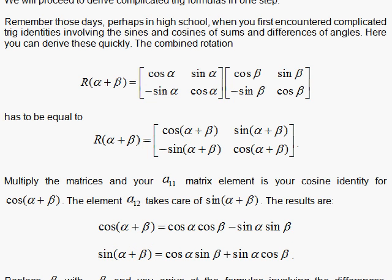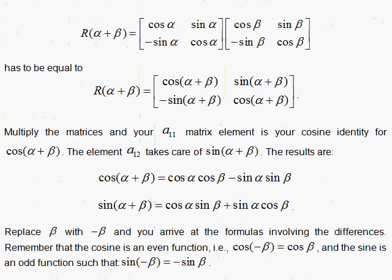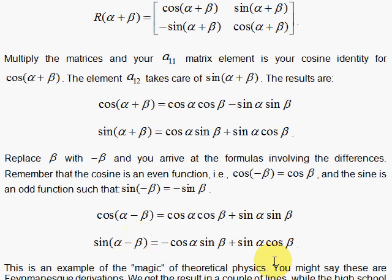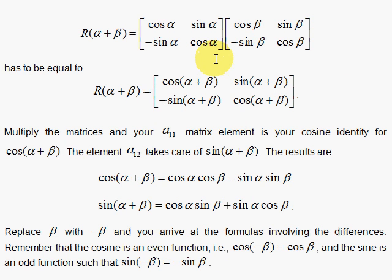And by replacing beta with minus beta, you can then get the differences of the angles. And this is an example of a Feynman derivation, a reward for understanding something elegantly at a fundamental level in theoretical physics. Then as a byproduct, we get an easy derivation of a rather complicated trigonometric formula, or in this case, more than one.